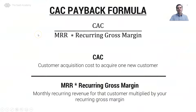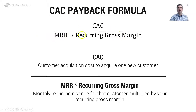The CAC Payback Period formula: in the numerator, we have CAC — the cost to acquire one new logo. We're dividing that by our MRR times our recurring gross margin. So this is payback on a gross margin weighted basis.